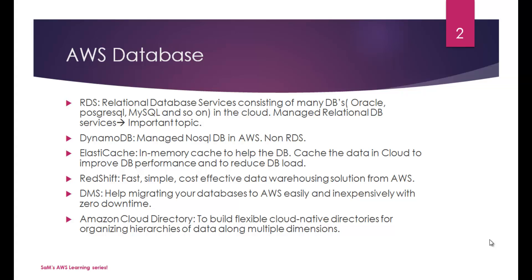ElastiCache is another offering from AWS. Essentially it is an in-memory cache to help improve your database performance. Amazon decided to provide it as a dedicated service — the idea being to cache data in the cloud to improve DB performance and reduce DB load.